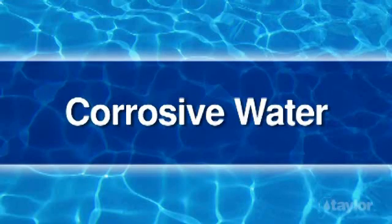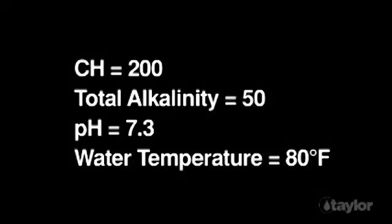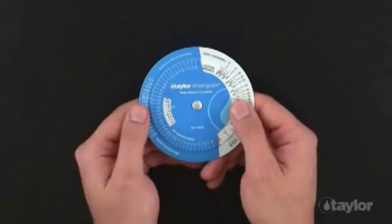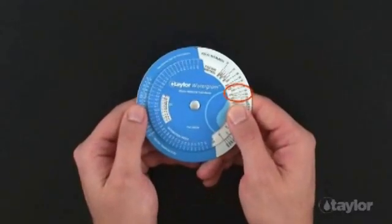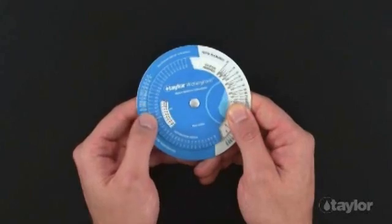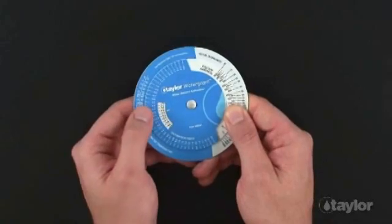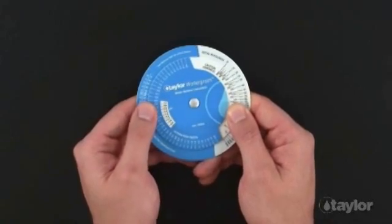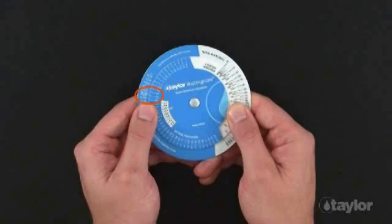Corrosive water. For this next demonstration, we will be using values that will give us a saturation index that indicates corrosive water. Set the calcium hardness value of 200 opposite the total alkalinity value of 50 on the Watergram. Hold the calcium hardness and total alkalinity values where they are and turn the wheel until the arrow points to the pH value of 7.3. Find the water temperature of 80 degrees Fahrenheit.